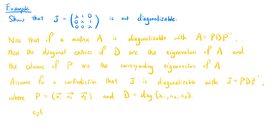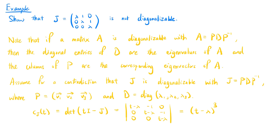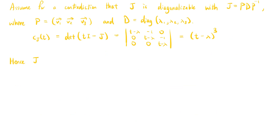The characteristic polynomial of J, which is the determinant of (TI minus J), is the determinant of the matrix with T minus λ, negative 1, 0 in the first row; 0, T minus λ, negative 1 in the second row; and 0, 0, T minus λ in the third row. Since this matrix is upper triangular, its determinant is the product of the main diagonal entries, which is (T minus λ)^3. Hence, J has only one eigenvalue, λ.